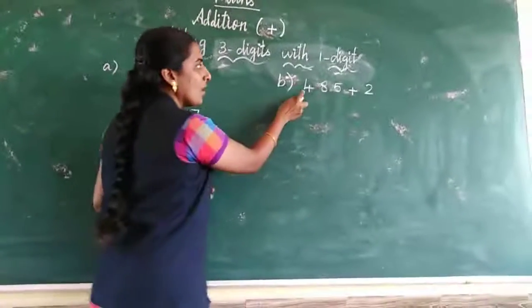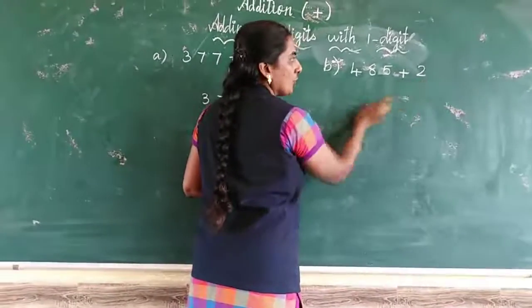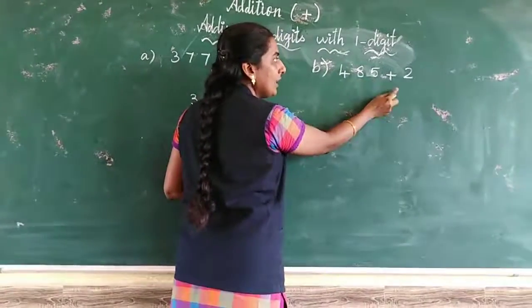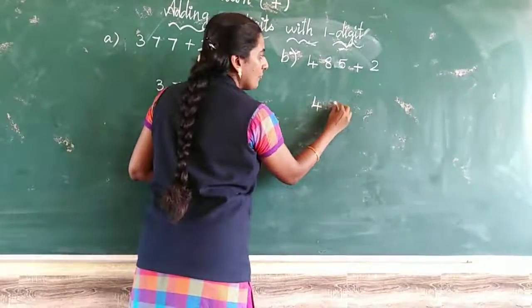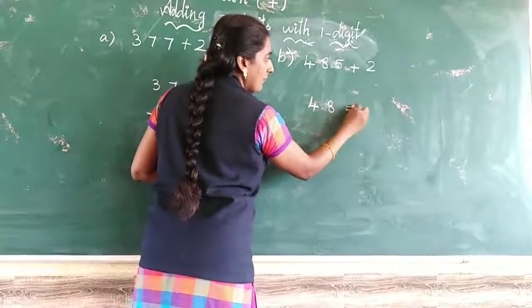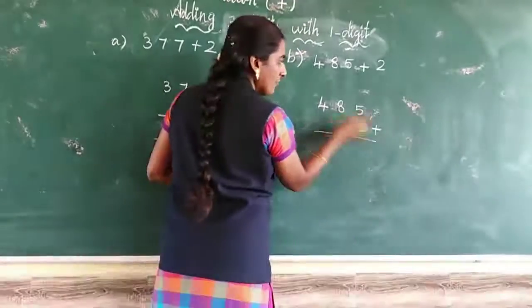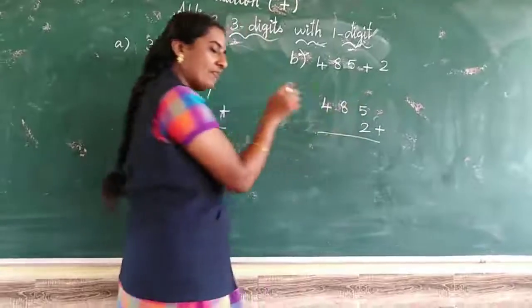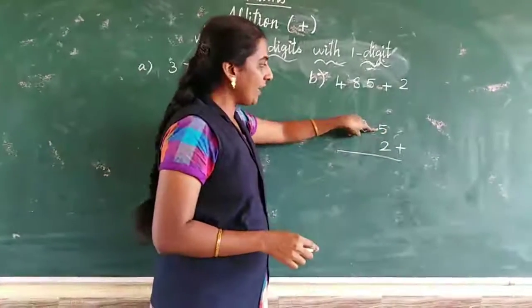Next we sum 485 plus 2. We write the three-digit number: 4, 8, 5, then plus 2. First take the ones place number. Every time we must take the ones place first. 5 and 2.